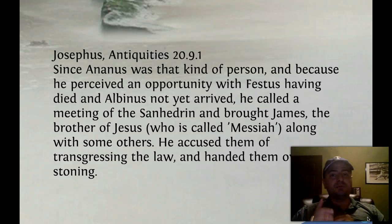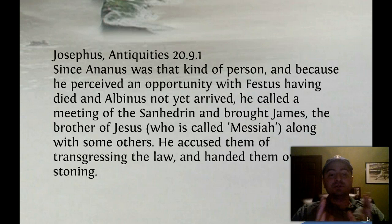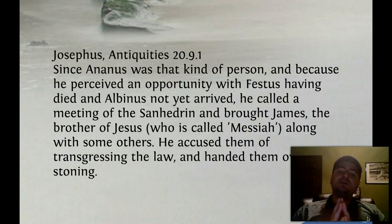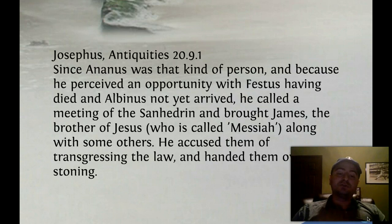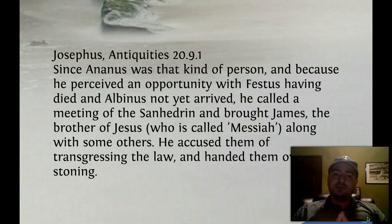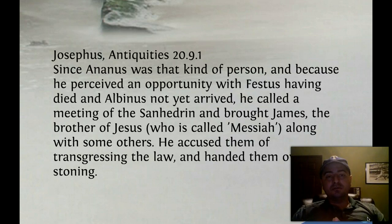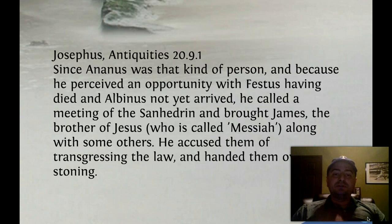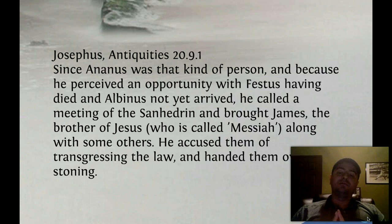The second reference is one that most scholars consider genuine. It reads: 'Since Aeneas was that kind of person, and because he perceived an opportunity with Festus having died and Albinus not yet arrived, he called a meeting of the Sanhedrin and brought James, the brother of Jesus who is called Messiah, along with some others. He accused them of transgressing the law and handed them over for stoning.' This is something we know happened as referenced in the book of Acts — certain followers of Jesus were brought before the Sanhedrin and stoned. Stephen is the most prominent example in Acts. This is the kind of thing a Jew would certainly write, giving an account of the death of James.